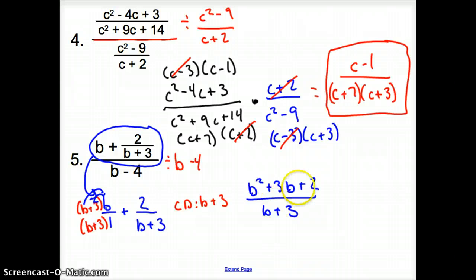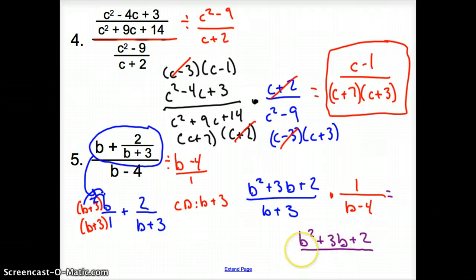So now the top is rewritten like this. But now what am I dividing by? I am dividing by b minus 4 over 1. So when I multiply, I take this times 1 over b minus 4. Now it looks tricky, but it's just taking it times 1. So the top is just going to stay the top.